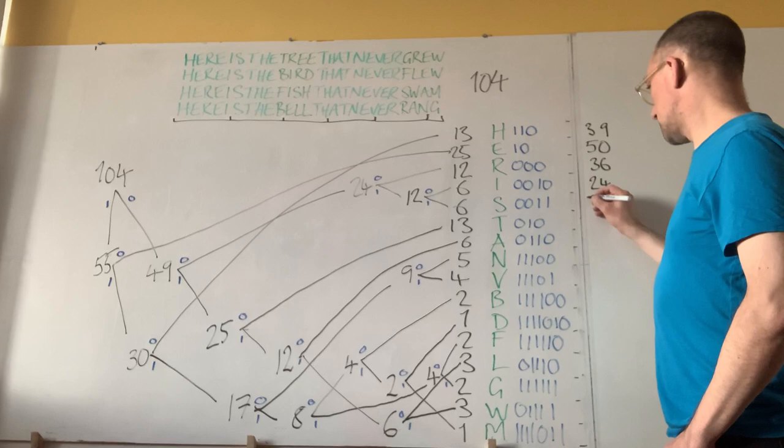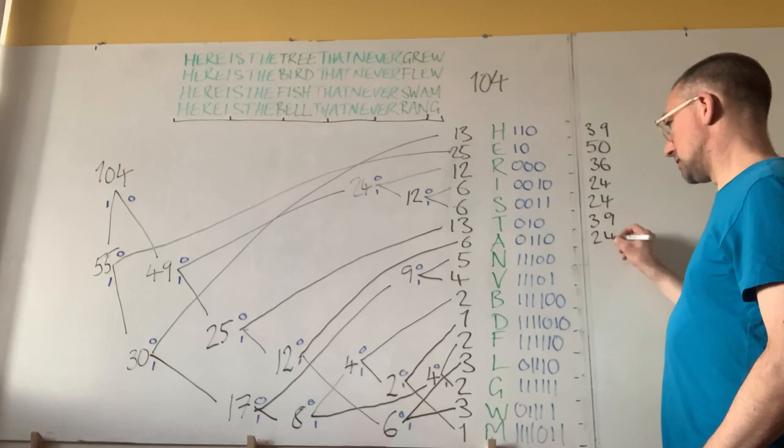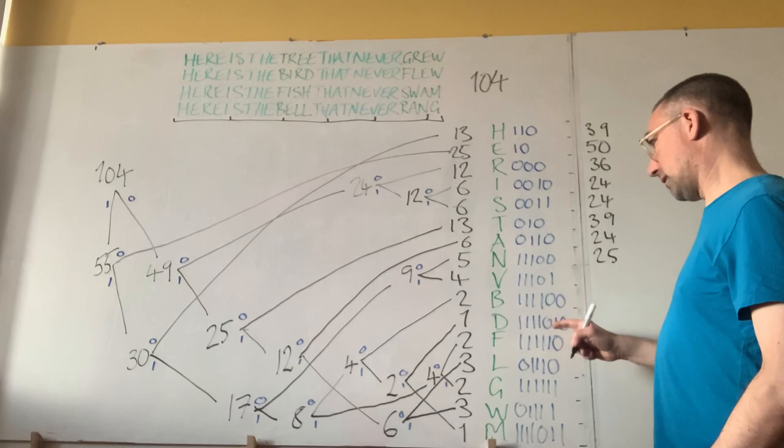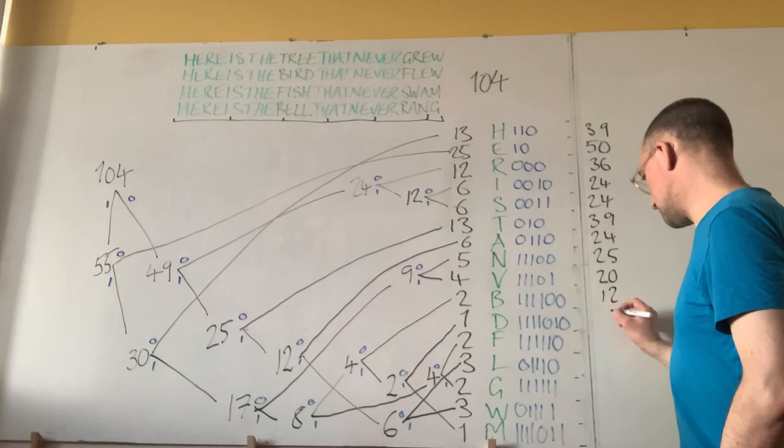Then 13 3s, 39 bits in coding T. For A, we have 6 4s, that's another 24, and for N, we have 5 5s, 25. For V, we have 4 5s, that's 20. For B, we have 2 6s, that's 12. For D, we have just the 1 7.